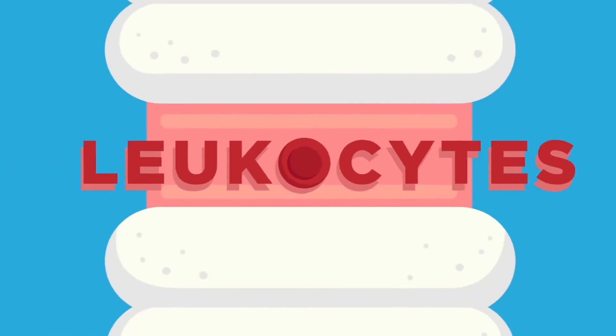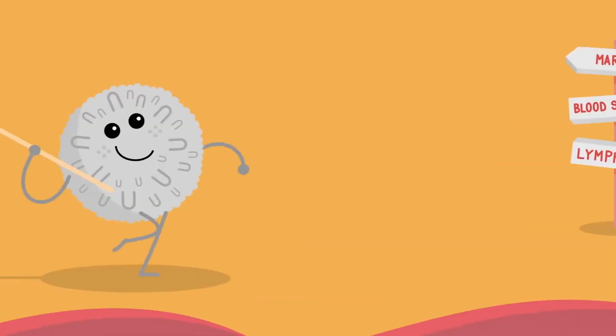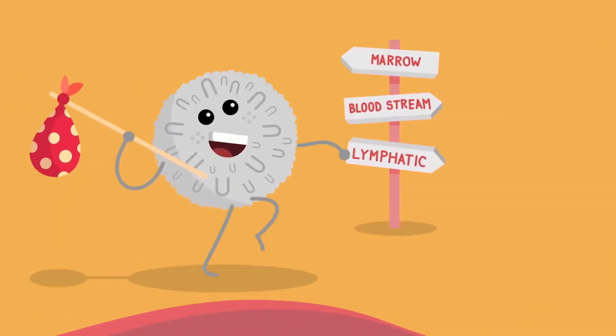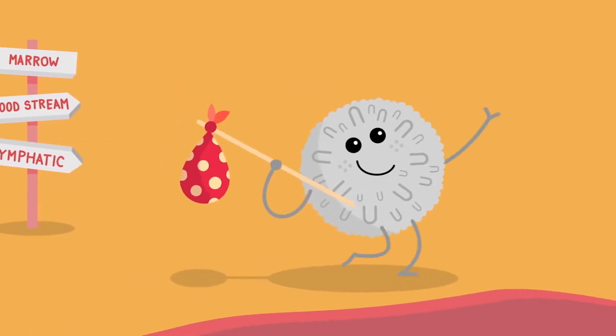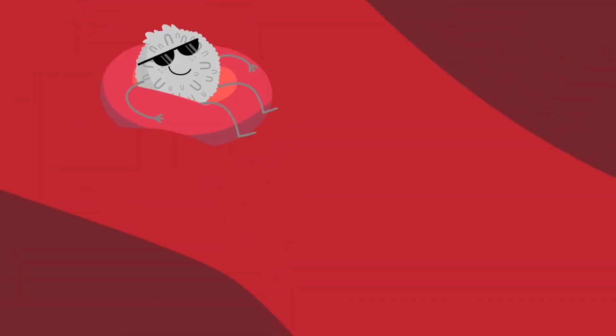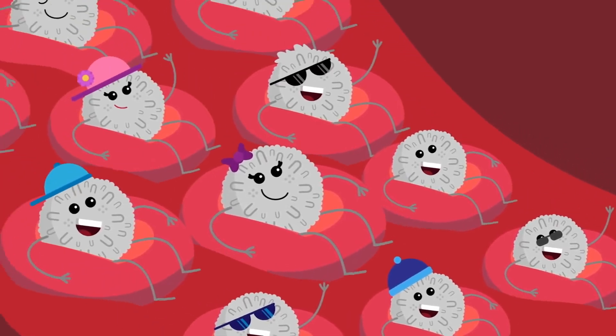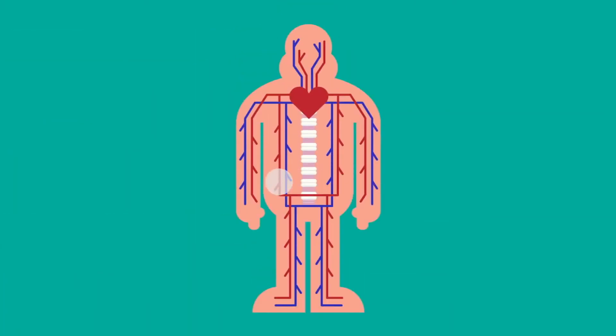The immune system relies on millions of defensive white blood cells, also known as leukocytes, that originate in our bone marrow. These cells migrate into the bloodstream and the lymphatic system — a network of vessels which helps clear bodily toxins and waste. Our bodies are teeming with leukocytes: there are between 4,000 and 11,000 in every microliter of blood.